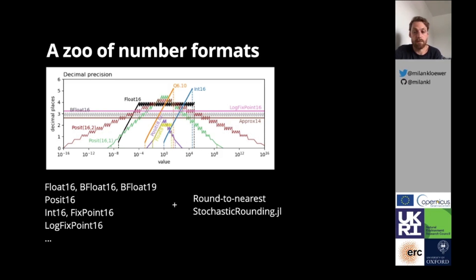Additionally, round-to-nearest can be replaced with stochastic rounding, which has been found to be superior in a range of applications. I have developed the corresponding StochasticRounding.jl package for that. Check it out.